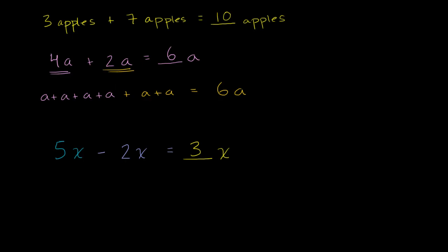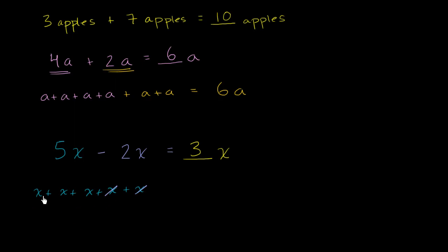If you really think about what that means: five X's are just X plus X plus X plus X plus X. And then we're going to take away two of those X's — take away one X, take away two X's. You are going to be left with three X's.